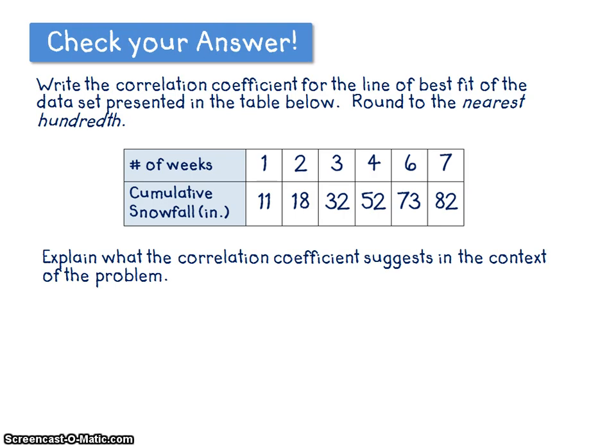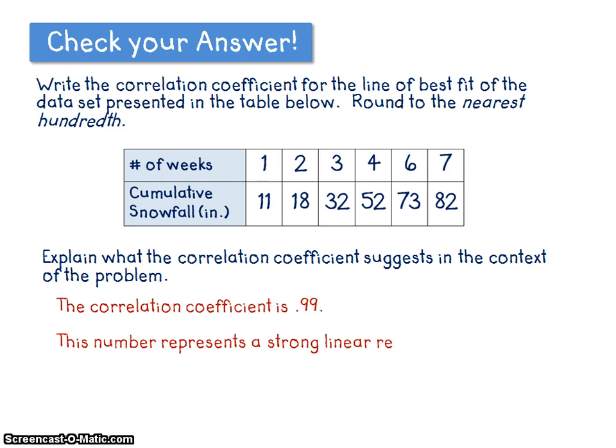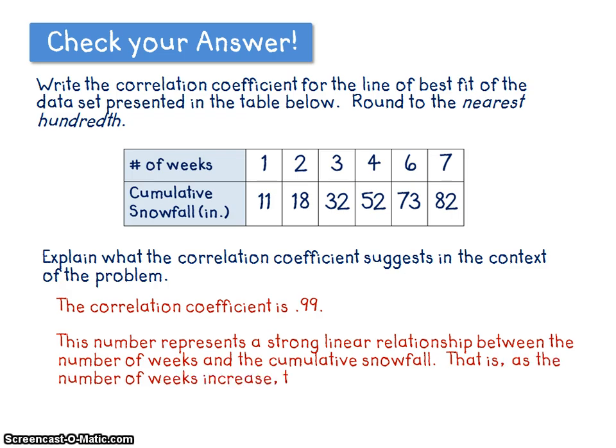Are you ready to check your answer? The correlation coefficient is 0.99. This number represents a strong linear relationship between the number of weeks and the cumulative snowfall. That is, as the number of weeks increases, the snowfall amount also increases. So the question was asking you to explain what it suggested in the context of the problem. If you had just said it represents a strong linear relationship, that wouldn't be enough. You needed to include the two variables that were being compared.